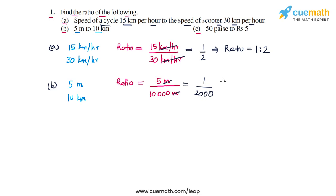So this is the ratio we get. The ratio can now be written as 1 is to 2,000. This is the answer for part B — the ratio is 1 is to 2,000.